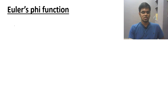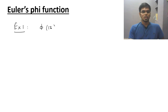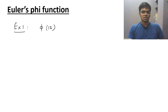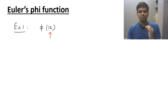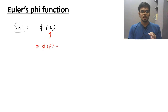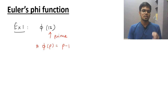Example number one: find phi of 13. The very first question you have to ask yourself is whether this number is prime or non-prime. If it is a prime number then you can use the formula: phi of a prime number p is equal to p minus 1. So 13 is a prime number, and the answer is phi of 13 equals 13 minus 1, which equals 12.